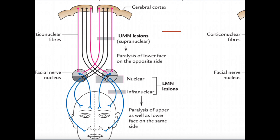We're going to hold that in mind, and now ask the same thing about the lower two-thirds of the face. Does the left lower two-thirds of the face have both left and right brain innervation? The answer is no. If we follow this neuron back up, we can see it's only innervated by an upper motor neuron coming from the contralateral side of the brain. So the forehead has bilateral innervation — the left forehead has innervation from both the left and right brain — whereas the left face only has innervation from the right brain.